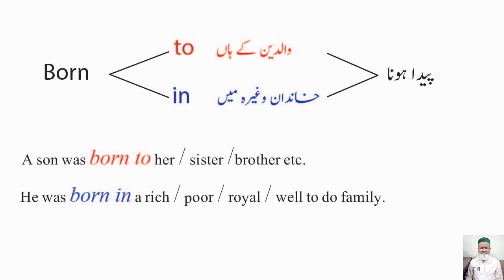Next: born to اور born in — جب والدین کے حوالے سے بات کریں تو 'born to' ہوگا، اور اگر family یا خاندان کے حوالے سے بات کریں تو 'born in' آئے گا۔ Commonly family کے لیے بھی 'to' استعمال ہوتا ہے لیکن exam کے لیے یہ فرق یاد رکھیں۔ مثال: A son was born to her sister. اور: He was born in a rich / poor / royal family.